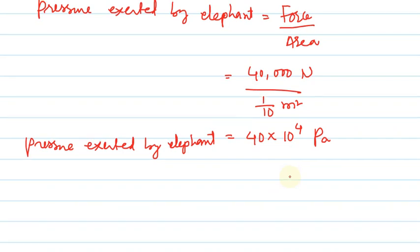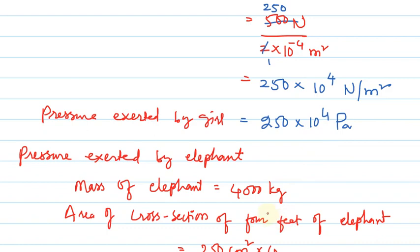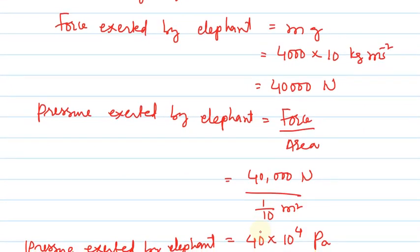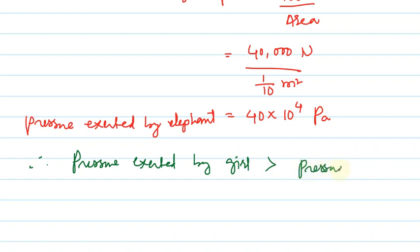So here, pressure exerted by girl is 250 into 10 to the power of 4 pascals, which is greater than pressure exerted by elephant at 40 into 10 to the power of 4 pascals. Therefore, the girl exerts more pressure due to the small area of cross-section of her heels, whereas the elephant exerts less pressure due to the larger area of cross-section of its feet. Hope you have understood. Thank you.